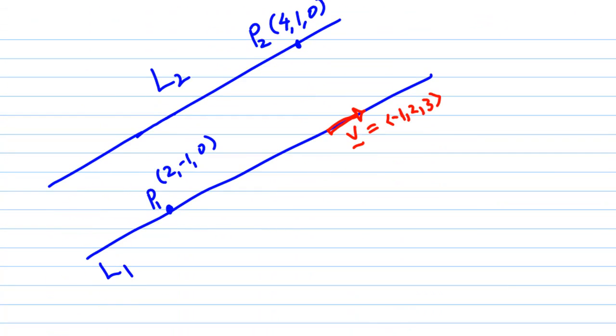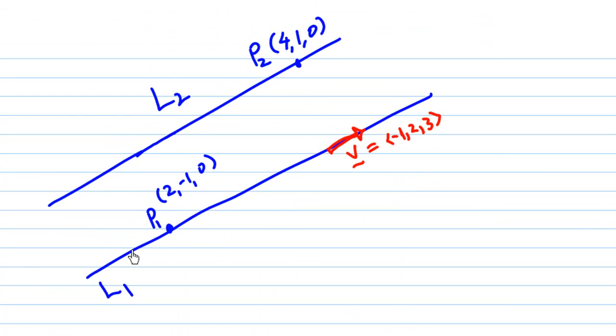This is how the picture looks like. I will draw L1 here, passing through the point 2, 1, 0. The direction of L1 is -1, 2, 3, and L2 passes through the point 4, 1, 0. I'm going to find the distance between these two lines. The meaning of distance between these two lines means the shortest distance, that means the distance here, D.